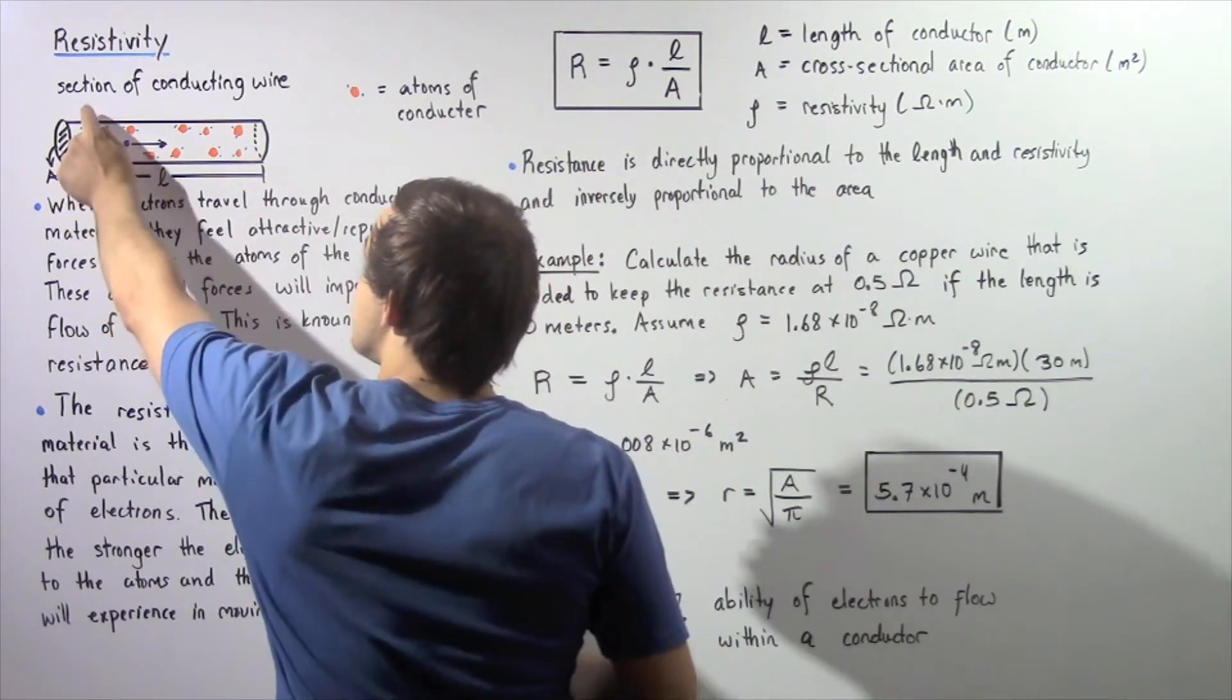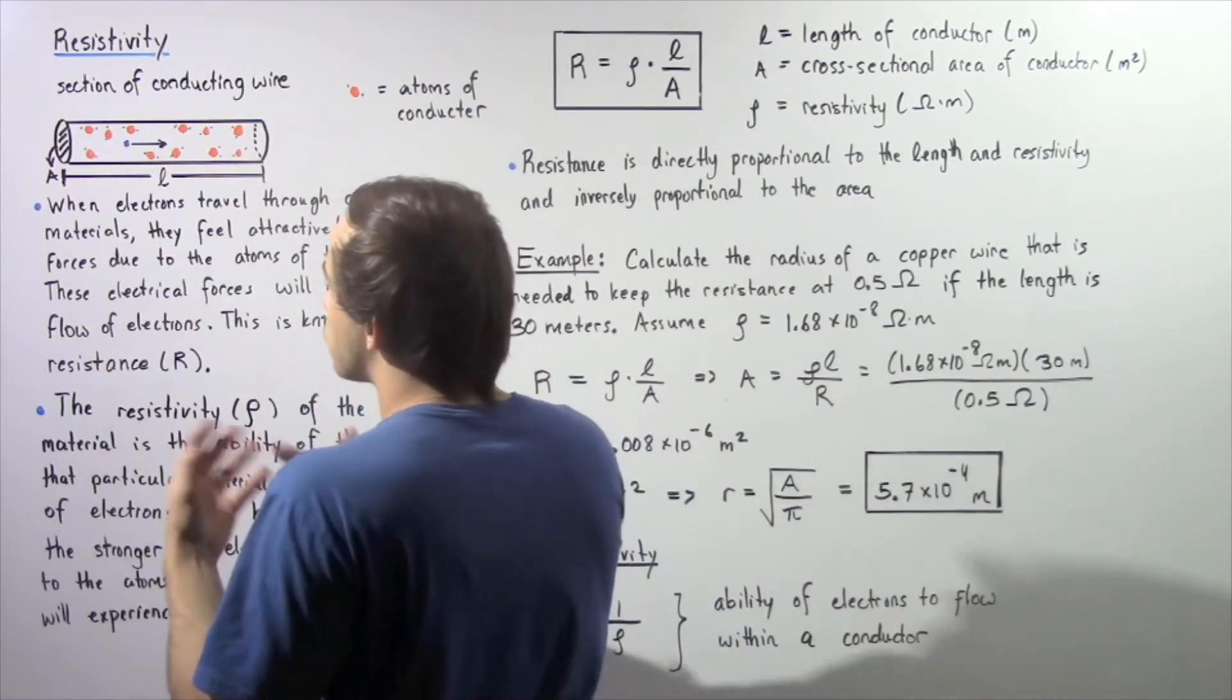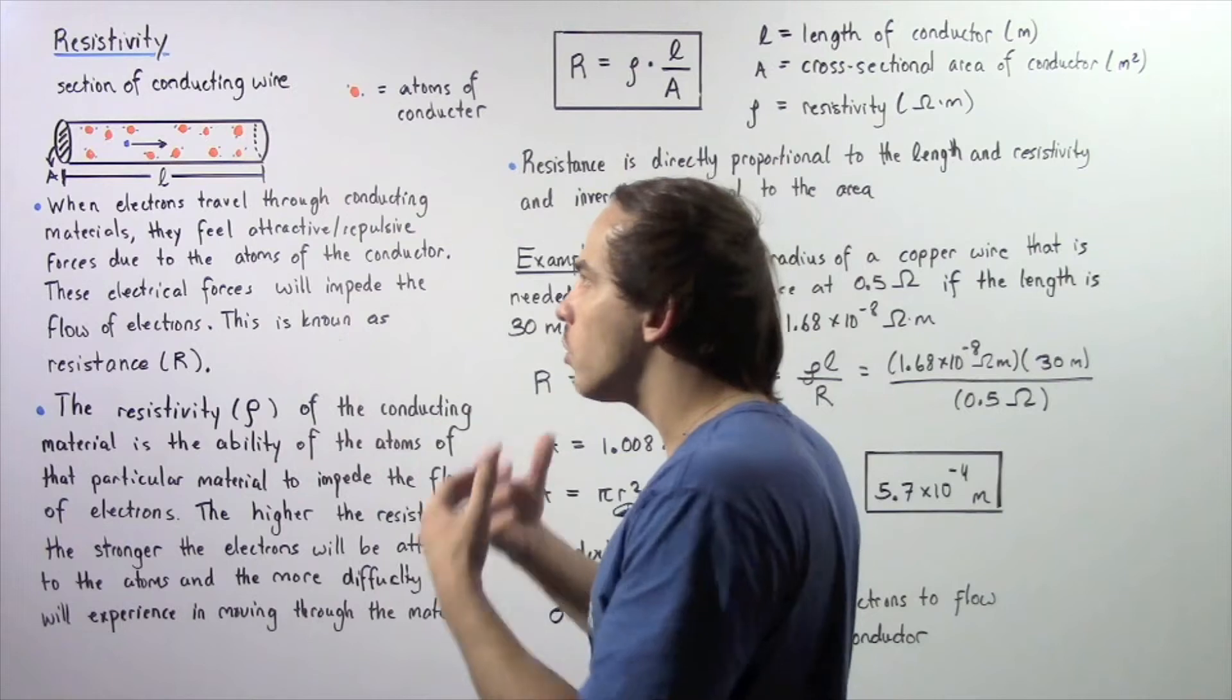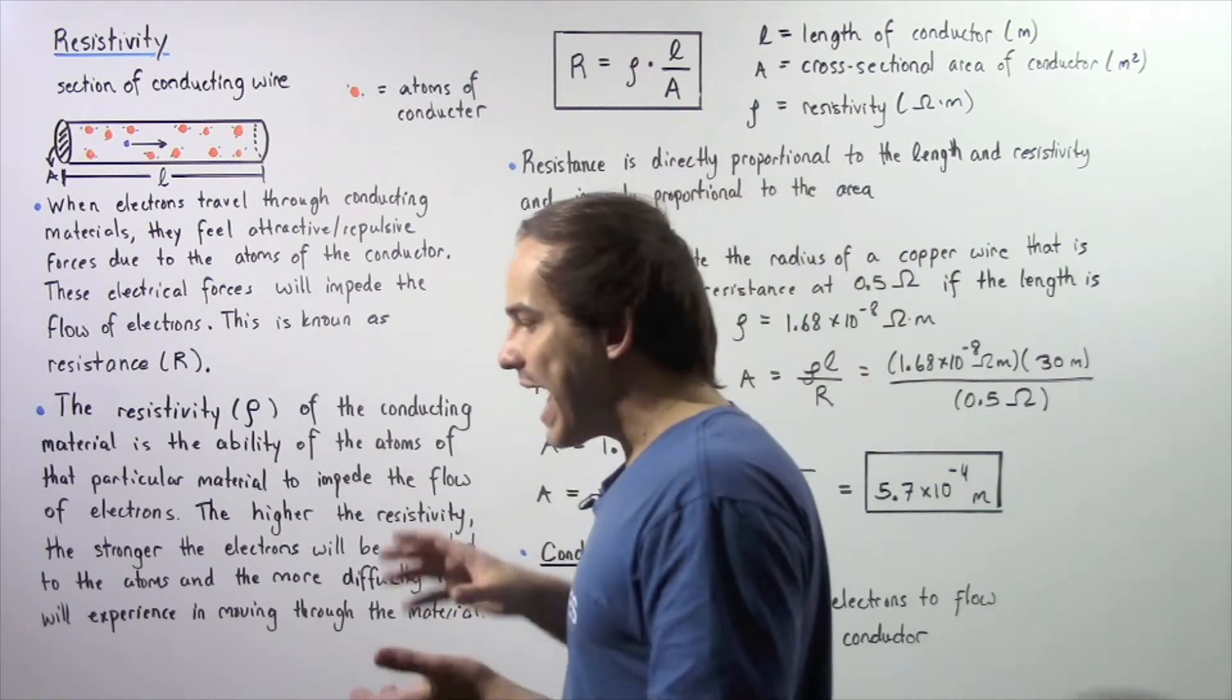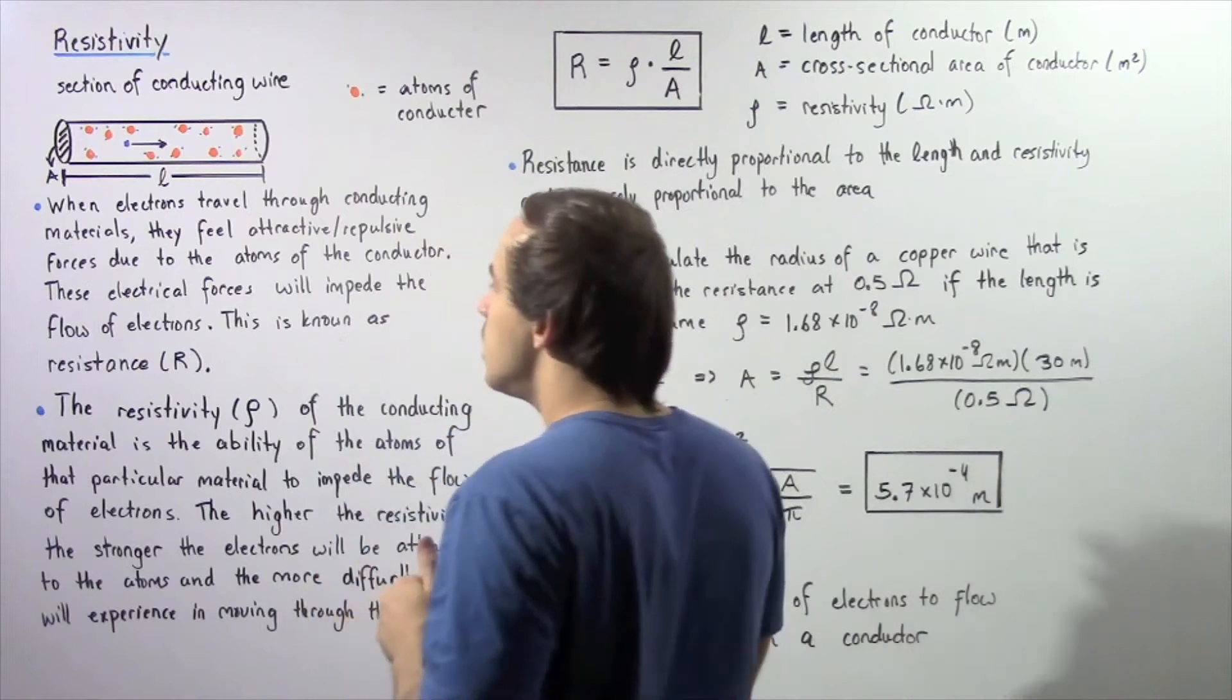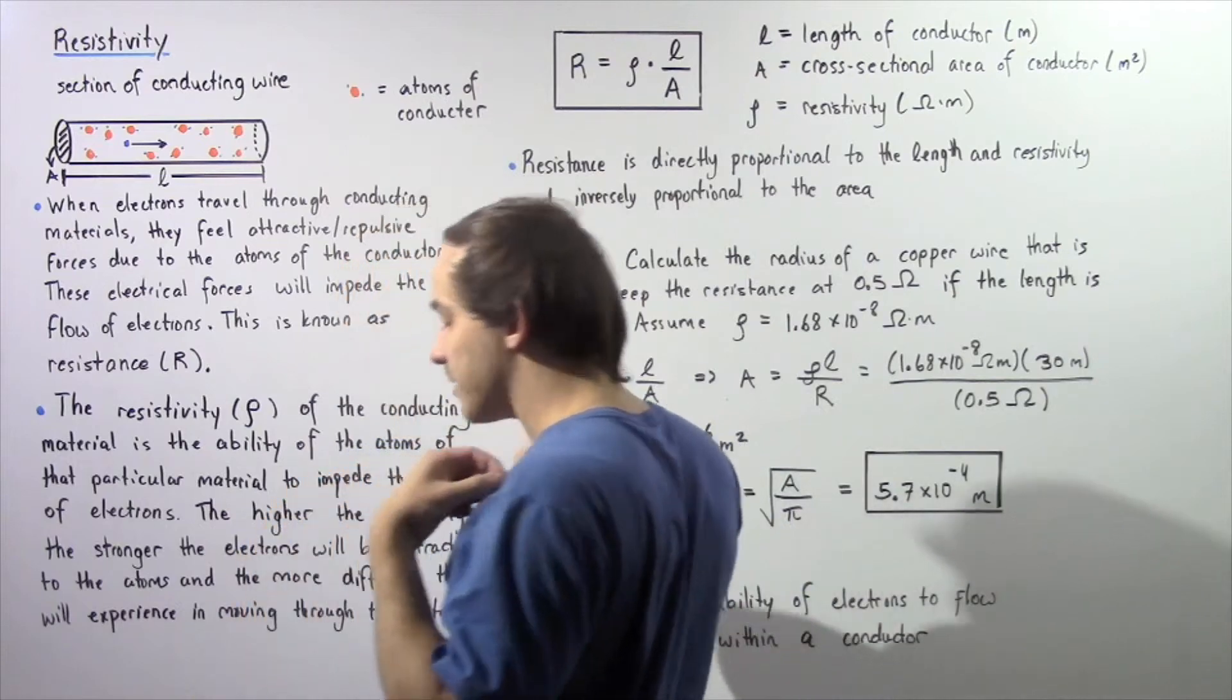These orange dots along with the blue dots are essentially the atoms of our conducting material, including the protons and neutrons found in the nuclei and the electrons which are orbiting those nuclei. As you might know, atoms are mostly empty space. Because of the small size of our electron, it will have relatively little difficulty in traveling through our conducting wire.